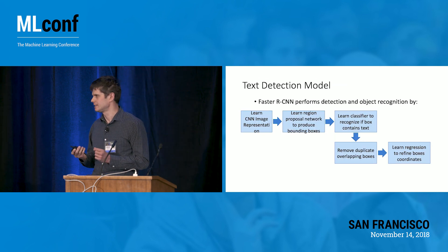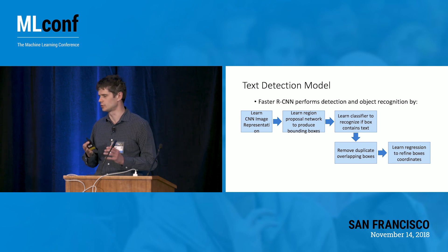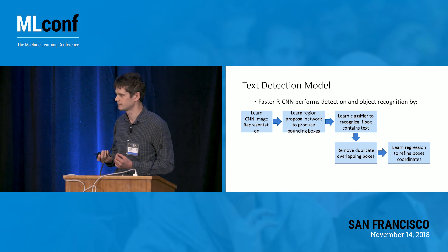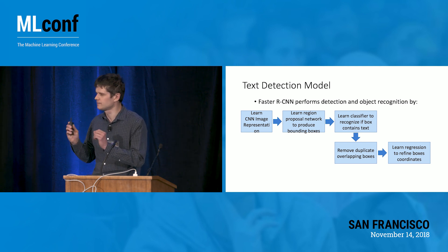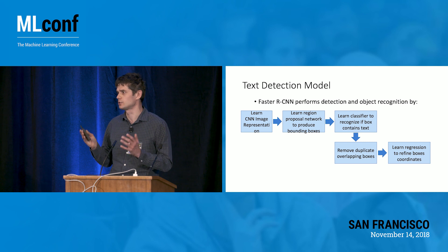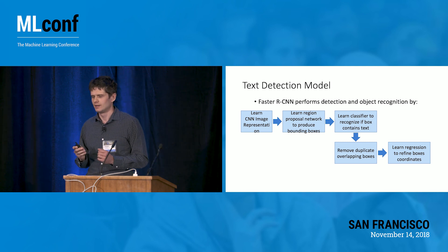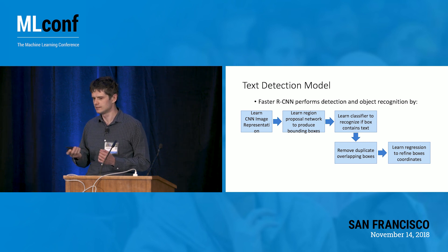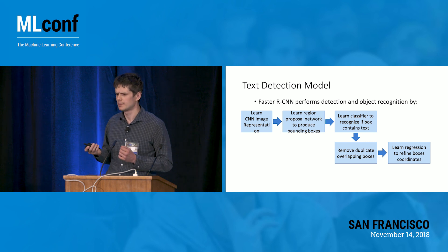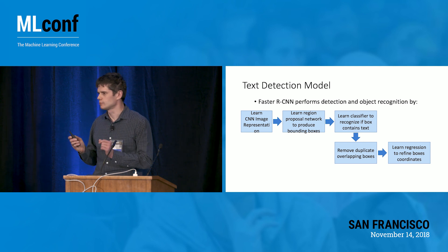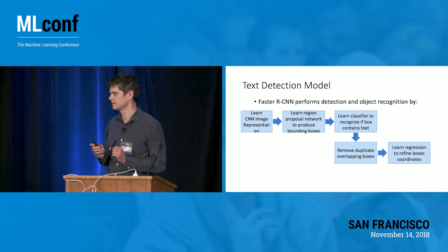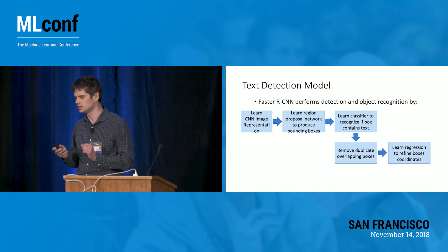Faster R-CNN performs detection in several steps. It first learns the image representation during training, then produces bounding box proposals which are not yet fully correct. It also learns a binary classifier that predicts whether a bounding box contains text. Then overlapping duplicate bounding boxes are removed during inference using non-maximal suppression. Finally, a regression step corrects the bounding box coordinates to put the correct rectangle around each word.